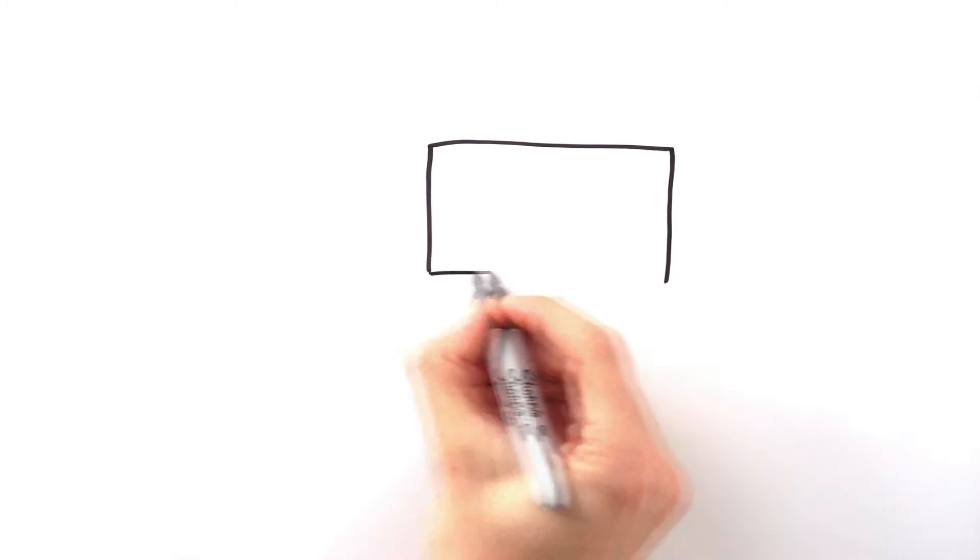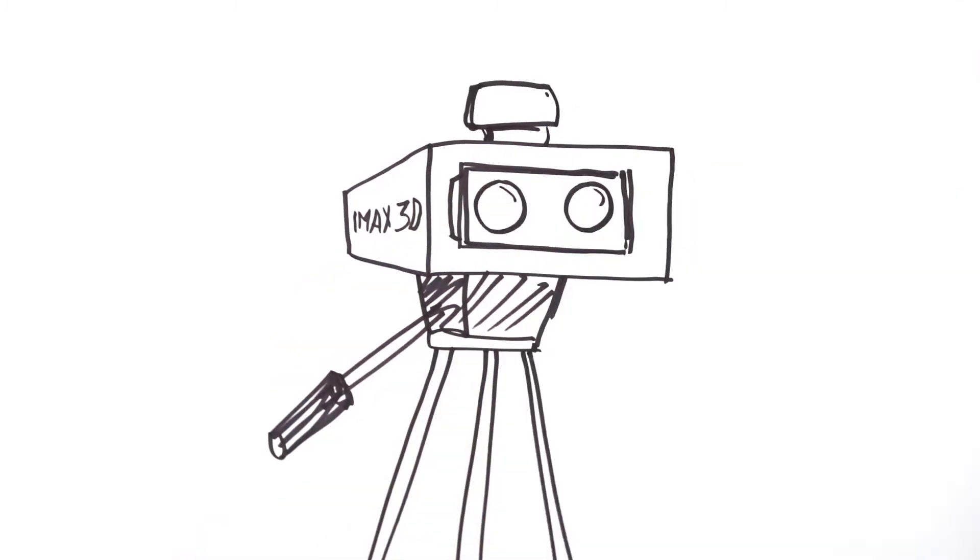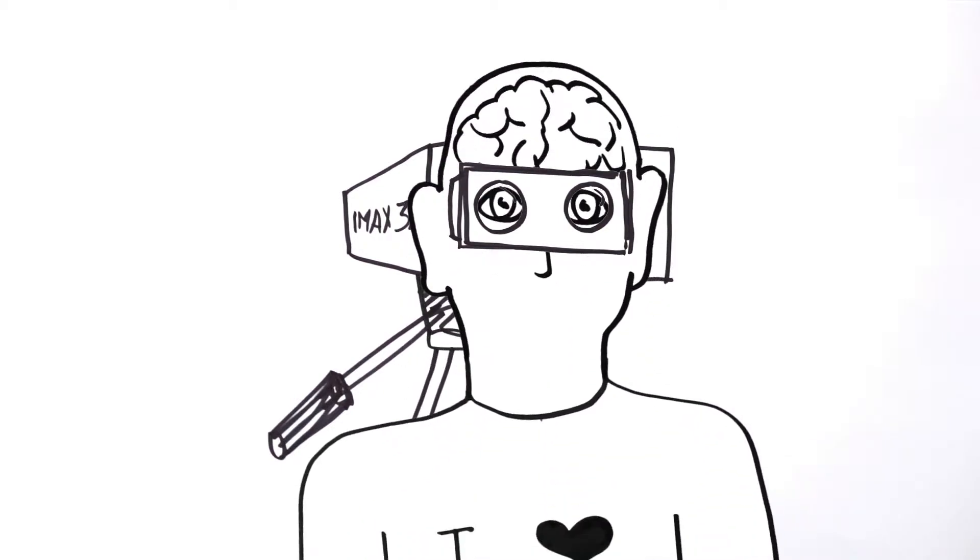But before you can get two images on the screen, they need to be captured and projected in a very specific way. IMAX cameras shoot two separate images from slightly different angles through dual lenses positioned a similar distance apart as the distance between your eyes.